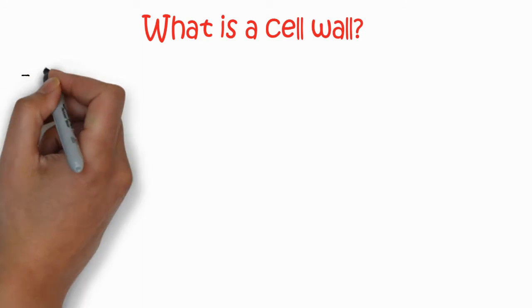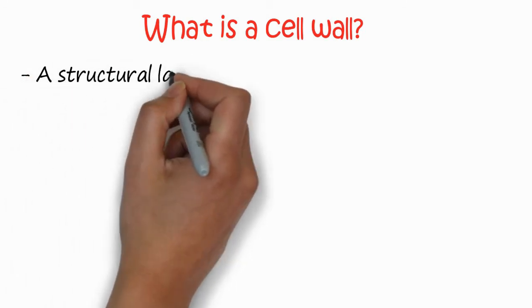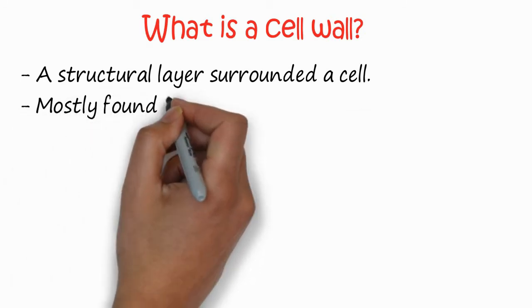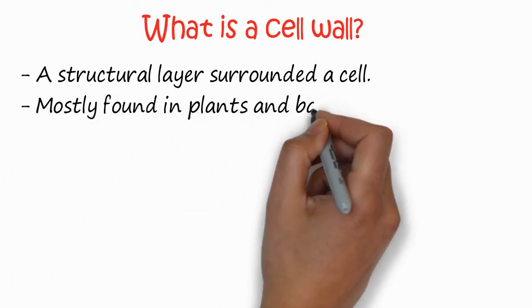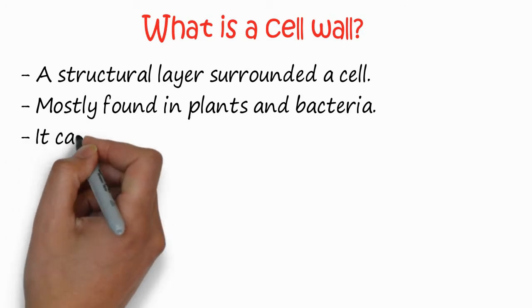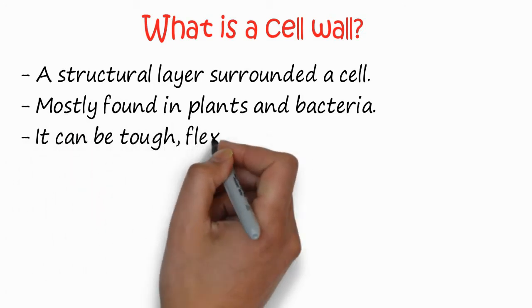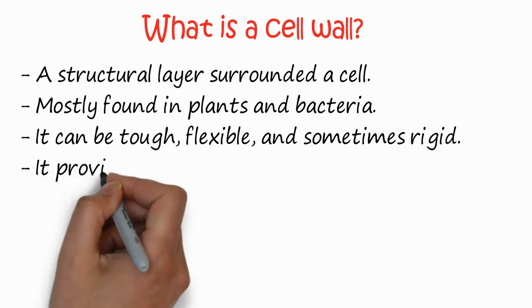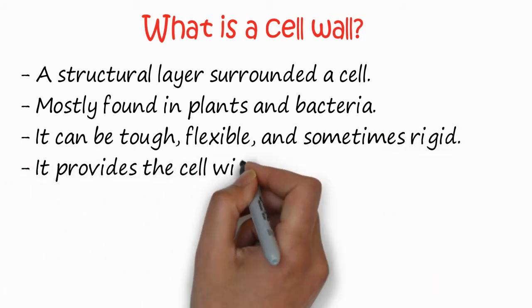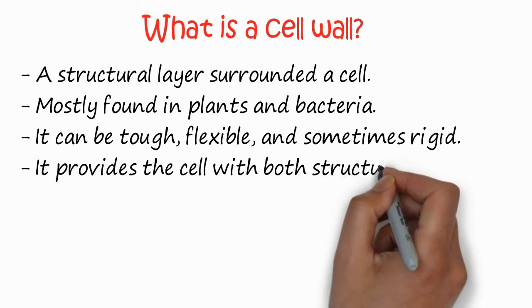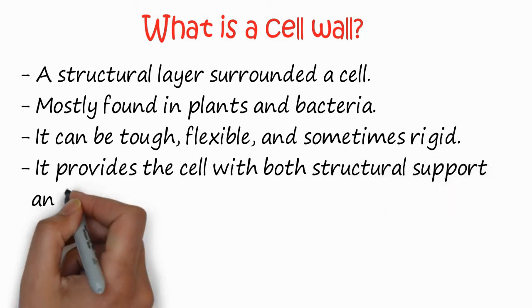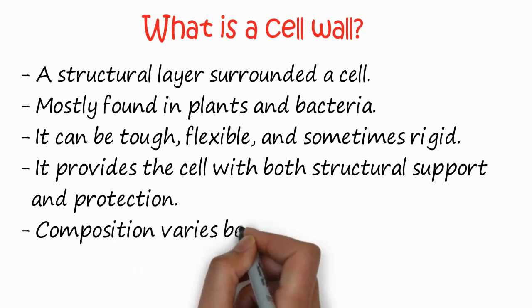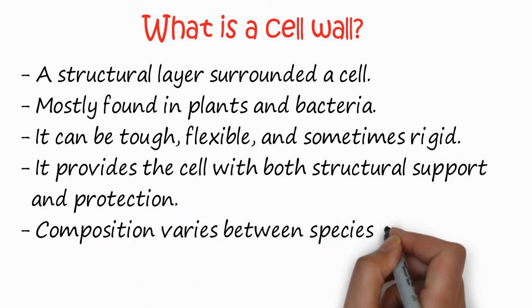First, we need to know what is a cell wall. Cell wall is the outer layer in the plant cell. It is a structural layer which surrounds a cell, mostly in plants. They are found in plants as well as bacteria. It can be tough, flexible, and sometimes rigid. It provides the cell with both structural support and protection.